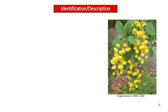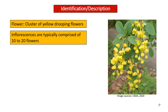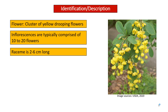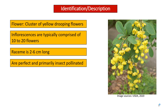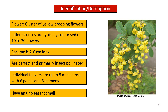Identification or description: It has a cluster of yellow drooping flowers. The inflorescences are typically comprised of 10 to 20 flowers. The raceme is 2 to 6 cm long. The flowers are perfect and primarily insect pollinated. Individual flowers are up to 8 mm across or wide, with 6 petals and 6 stamens. They have an unpleasant smell.